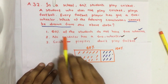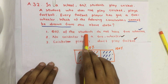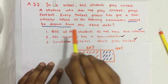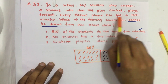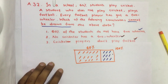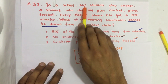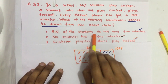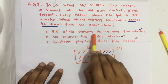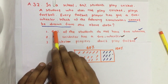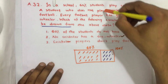Now let us see the conclusions. The first conclusion is: 60% of the students do not have a two-wheeler. Here it is only given that every football player has got a two-wheeler. Nothing is mentioned about whether a cricket player has got a two-wheeler or not. So we can't conclude that 60% of the students do not have a two-wheeler. We can't draw such a conclusion from the above data.